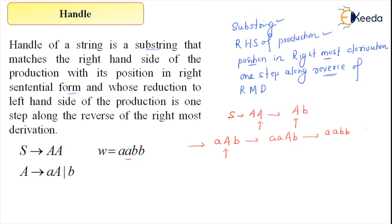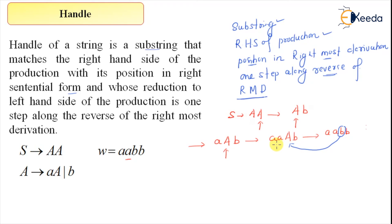Now I want to locate the handle. What I have written is the RMD — the rightmost derivation for this string in right sentential form. To locate the handle, I traverse in reverse. In this step, this b is the handle. So for the string a, a, b, b — this small b with its position value is the handle. In this step, small a, capital A is getting reduced to capital A, so small a, capital A with its position value is the handle.